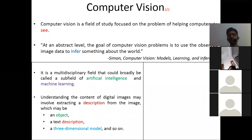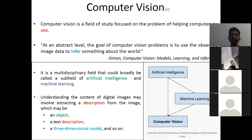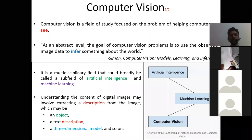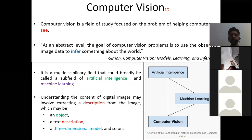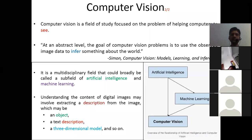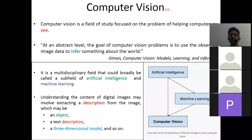Computer vision is also a multidisciplinary field that could broadly be called a subfield of artificial intelligence and machine learning. Understanding the content of a digital image may involve extracting a description from the image — which may be an object, a text description, or a three-dimensional model. Without machine learning you cannot go for computer vision. Artificial intelligence is like a recipe — a container — and you achieve it through machine learning, computer vision, and deep learning, which are tools to achieve AI characteristics.